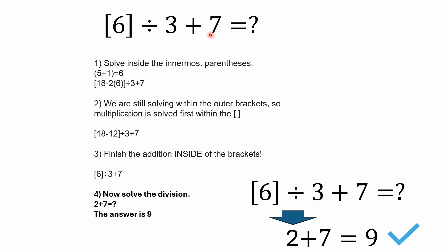So here again are all the steps. We basically had about four different steps that we went through. We solved inside of the innermost parentheses. Then we are still solving within the outer brackets. So multiplication solved first within the outer brackets. And then we end up, we still have to finish inside of the brackets. So we do the subtraction. 18 minus 12, and that was six. So we didn't move on to the division because we still had to resolve inside of the parentheses or brackets.